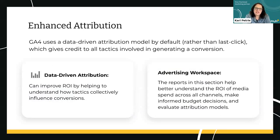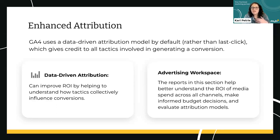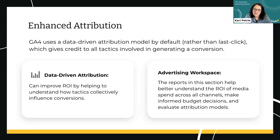Enhanced attribution is one of the big differences with GA4. It uses data-driven attribution instead of last click, which is what UA used. GA4 gives credit to all tactics involved in generating conversions, so it's giving you a much more accurate picture of what steps a user takes before converting on your website. When we say conversion, we're talking about actions that are considered leads — filling out a form, making a phone call, that sort of thing. This data-driven attribution can really improve your ROI by helping you understand how your tactics are influencing those conversions and how your spend across all channels is really impacting them. That's going to help you make smart decisions about your marketing budget.